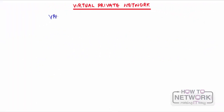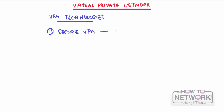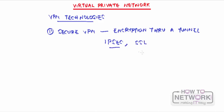So let's talk about VPN technologies from a cryptographic point of view. The first one is the secure VPN, also known as a cryptographic VPN. Secure VPNs secure traffic using encryption through a tunnel. Examples include IPsec and SSL. These are the two focuses of the CCNA Security exam, so we're going to be focusing on IPsec and SSL.